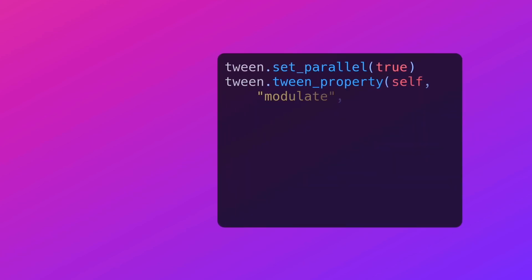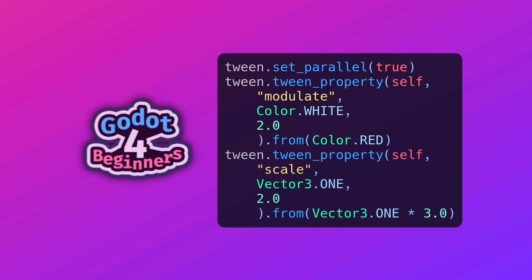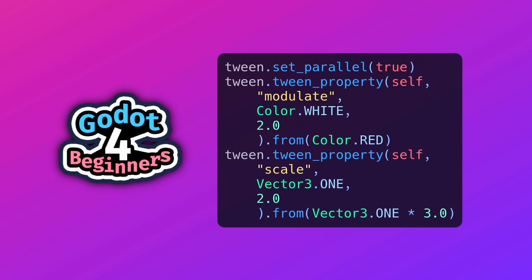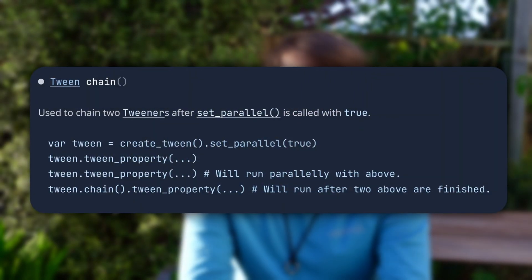This might not always be desirable — you might want to tween two properties at once, and then afterwards return to a series of animations. On the tween itself there is the parallel function. If you pass this true, it will make all the following animations happen in parallel, so you can tween the position and the size at the same time. When you're done with that, you can either turn parallel off, or use the .chain method to chain something after the current set of parallel functions.